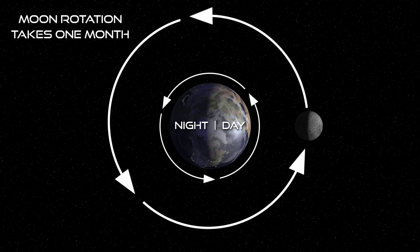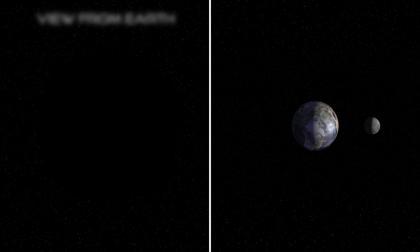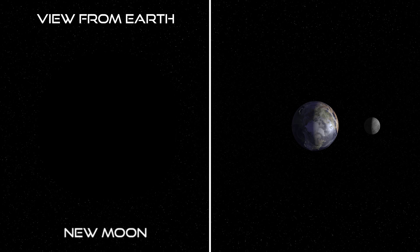The Moon takes about a month to go around Earth once. So let's track the Moon and how it looks in the sky to us here on Earth. When the Moon is between the Earth and the Sun, it is called a New Moon. The Moon is not visible — we are looking at the night side of the Moon from our vantage point.